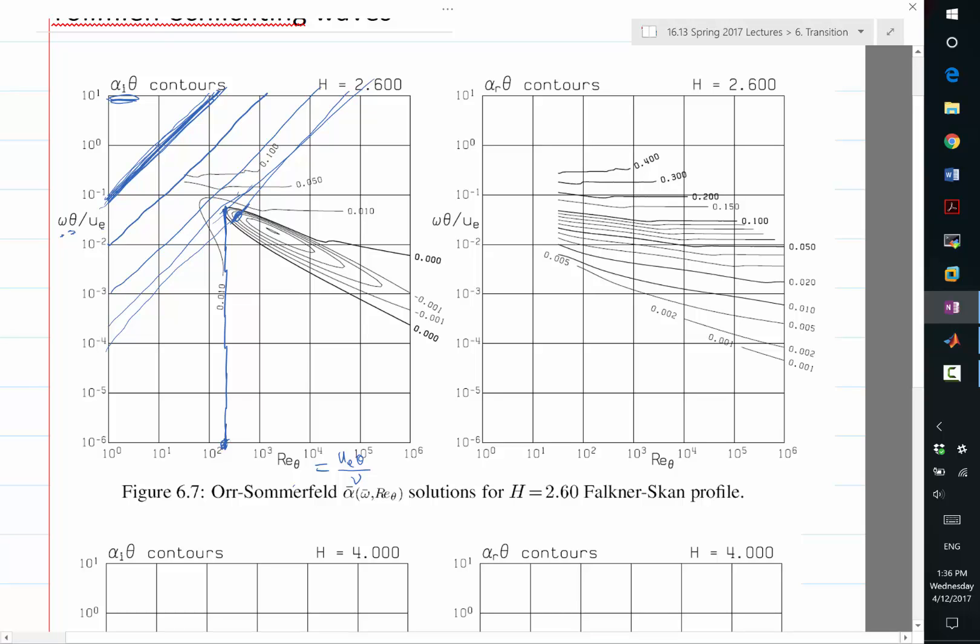But if you look at this wave, it grows only within a tiny region over space. It grows only over a region of maybe, pretty tiny. So Re theta over this region maybe grows by a factor of 2. That means X grows by a factor of like 4, right?